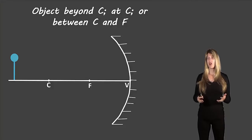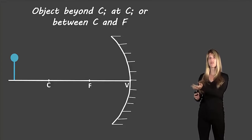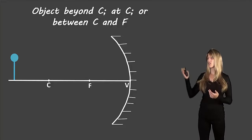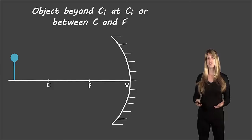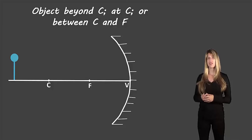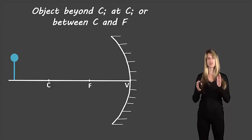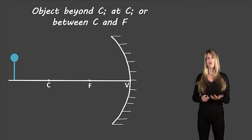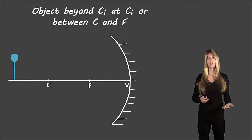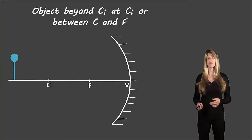We have several points we can talk about. The first is when the object is beyond C, meaning further from C than the mirror. The object could be at C, right at the center of curvature. It could be between C and F, anywhere between those two points. It could be at F, or it could be between F and the mirror. Those are all locations we consider when drawing ray diagrams.